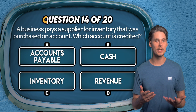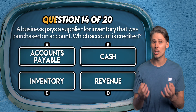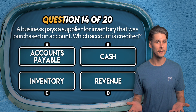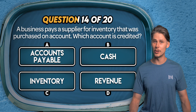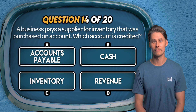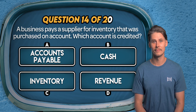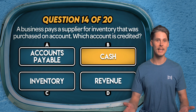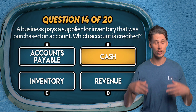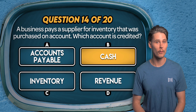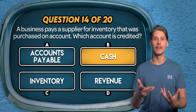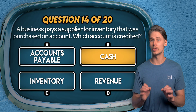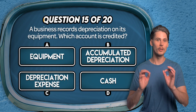Question 14. A business pays a supplier for inventory that was originally purchased on account — which account is credited? Is it accounts payable, cash, inventory, or revenue? It's B — cash. When the business pays its supplier, cash, an asset, is credited to reflect the outflow of money. The other side is a debit to accounts payable, which reduces the liability owed to the supplier.